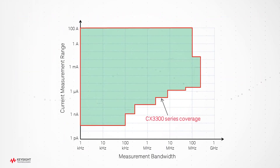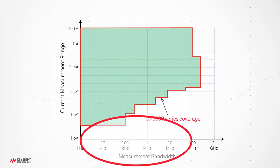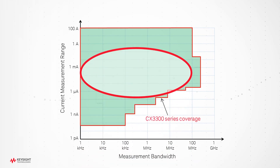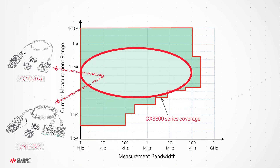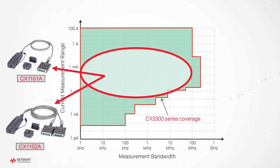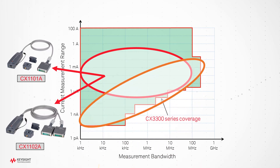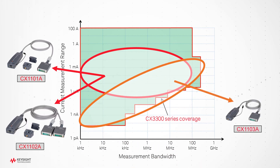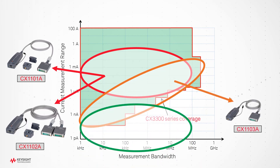This chart maps the CX3300 series sensor's measurement range. Each sensor features different measurement ranges and bandwidth. We have the right sensing solution for your application.